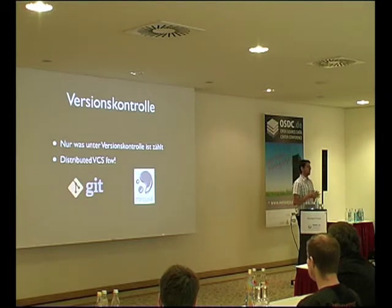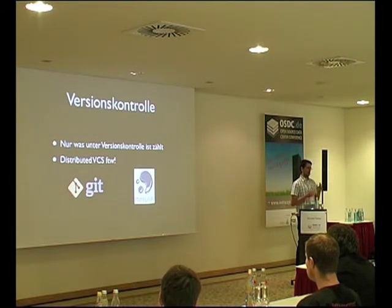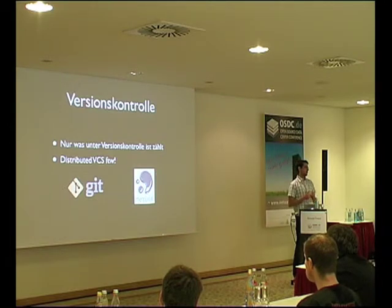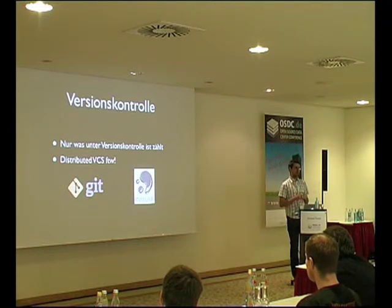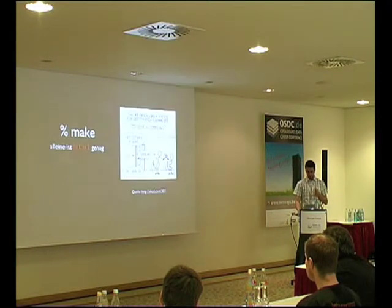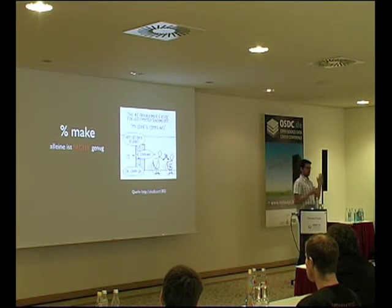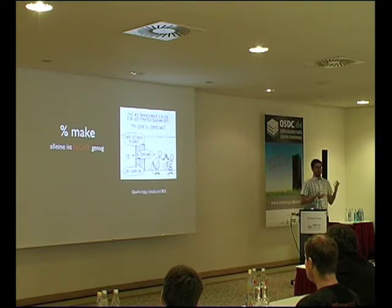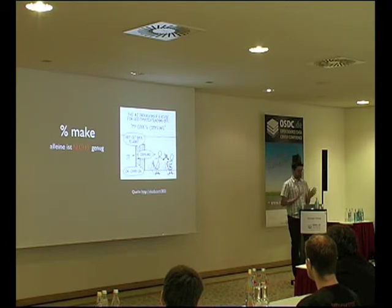Wichtiger Teil, wenn wir von Continuous Integration bzw. Continuous Delivery reden, ist Versionskontrolle. Es zählt wirklich nur das, was unter Versionskontrolle steht. Alles, was auf irgendeinem Entwicklerlaptop ist und nie eingecheckt worden ist, ist uninteressant – das wird nie in Produktionsbetrieb gehen. Distributed Version Control Systems wie Git oder Mercurial sind wunderbar für Continuous Delivery-Ansätze, weil sie ein sehr verteiltes und unabhängiges Entwickeln erlauben. Auch ein Make allein ist nicht genug – einfach nur Make machen reicht nicht, da gehört wesentlich mehr dazu.